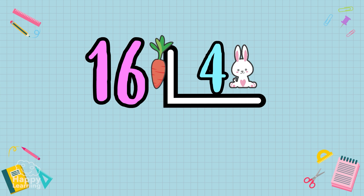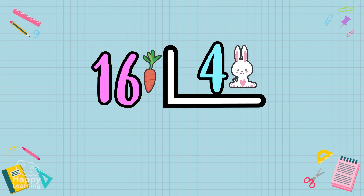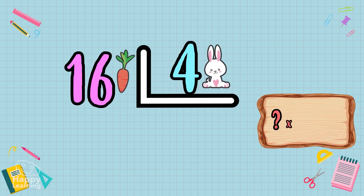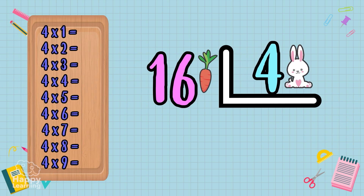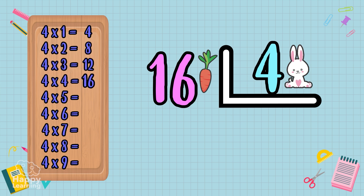We have to know that dividing is the opposite of multiplying. So to know how much 16 divided by 4 is, we need to find what number multiplied by 4 gives us 16. That's why it's very important to know the times tables. Let's try: 4×1=4, 4×2=8, 4×3=12, 4×4=16. There we have the number we were looking for — we put it here.